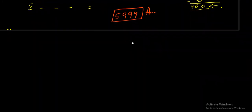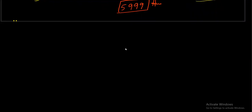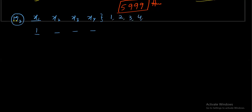Method 2 uses Beggar's Method — you might not expect this in a dictionary problem, but the application is beautiful. For numbers starting with 1: x1 is fixed as 1. The remaining three positions x2, x3, x4 need values ≥ 1. We treat the 9 digits (1–9) as 9 'baggers' and the 3 positions as 3 objects to distribute.